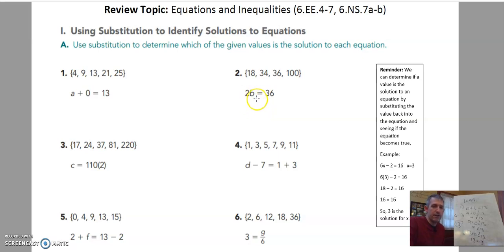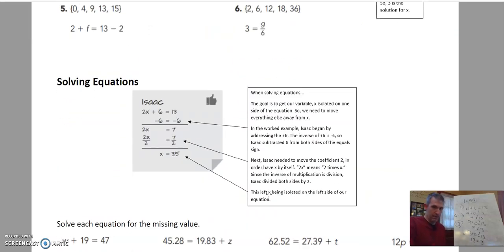Remember, if you have a number next to a variable, it means to multiply. If you have a number next to parentheses, it means to multiply. In this situation, you're going to want to simplify both sides, so add the 1 and the 3 together, and then see if it makes a true statement.